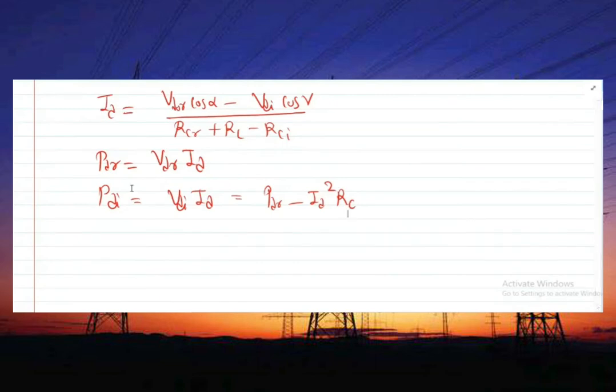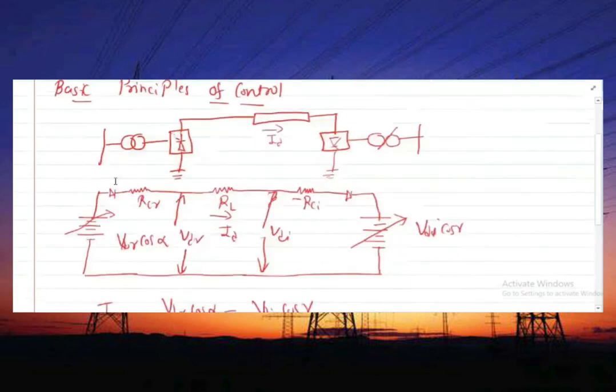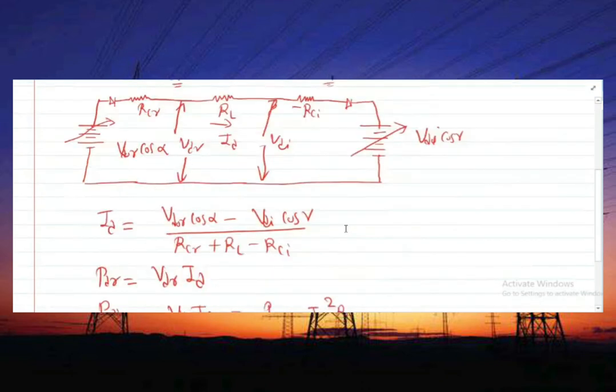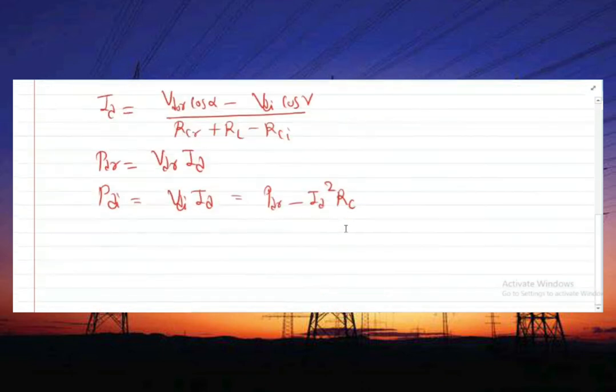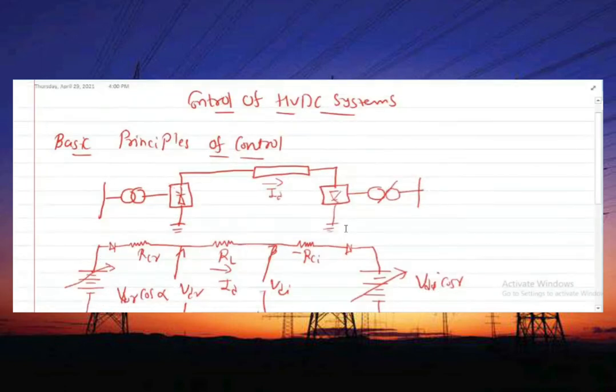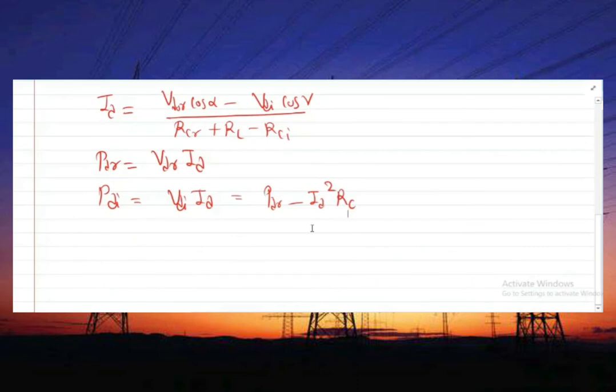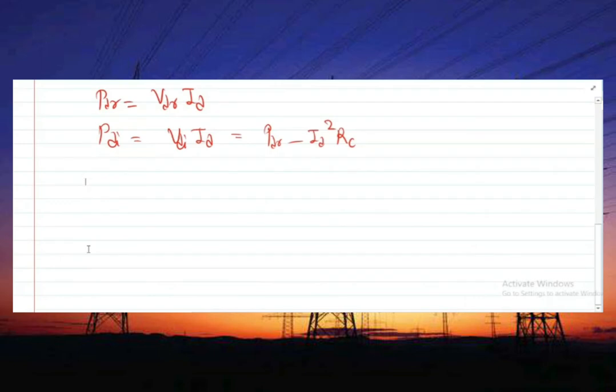The gate control which is very fast, 1-10 milliseconds, and the tap changing which is slow, 5-6 steps, are used in a complementing manner. The gate control is used initially for rapid action followed by tap changing to restore the converter quantities to the normal range. Power reversal is obtained by reversing the polarity of the direct voltage. Now, how can you select the controls? Some considerations influence the selection of the control characteristics.